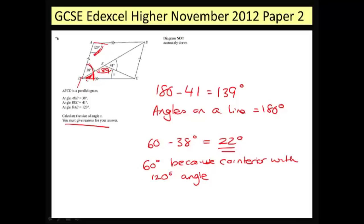Once I know that this one in here is 22 and the one at the top is 139, angles in a triangle add up to 180. So all I'm going to do is 180 minus 22 minus 139 and that's going to give me my missing angle which is 19 degrees. And I've already got my reasons in here that justify getting me full marks.